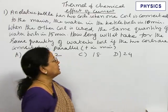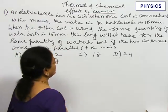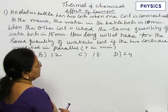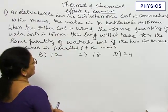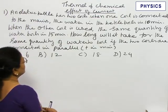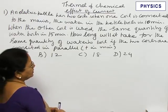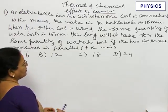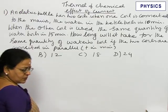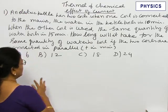The first question: there are two coils in the heater. When one coil is used, water in the electric kettle boils in 10 minutes. When other coil is used, the same quantity of water boils in 15 minutes. How long will it take for water to boil when the two coils are used in parallel? That is the question and we have been given the options ABCD.